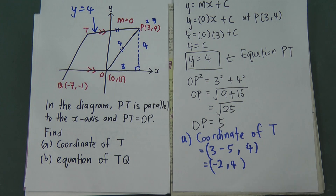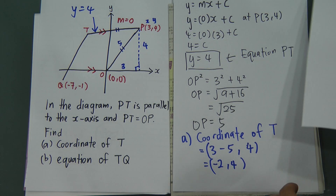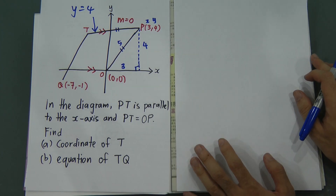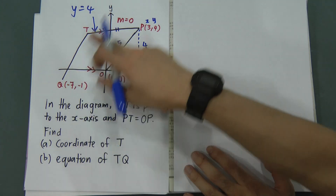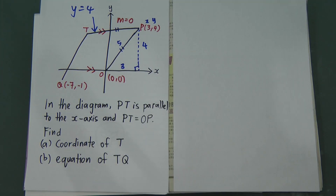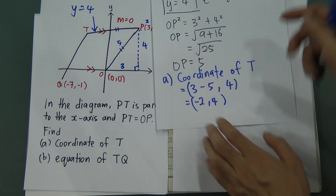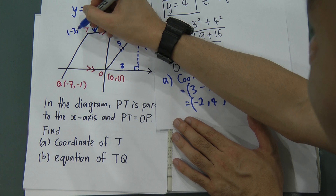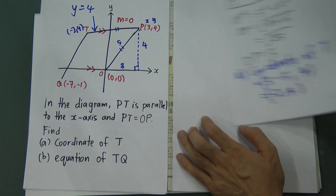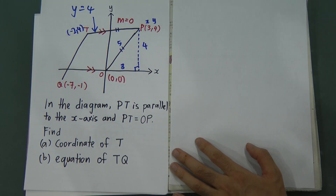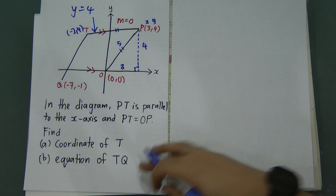Now for part B, we need to find the equation of TQ. To find the equation of TQ, you need the gradient. To find the gradient, you need two coordinates. We already have one coordinate: T = (−2, 4). Once we have the gradient, we substitute one of the coordinates into y = mx + c to get the full equation.